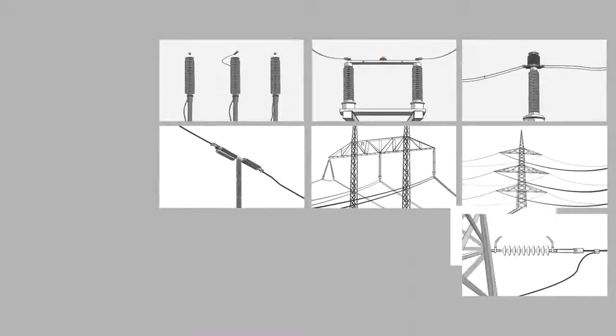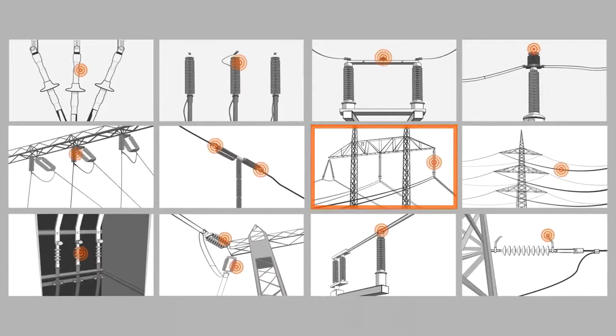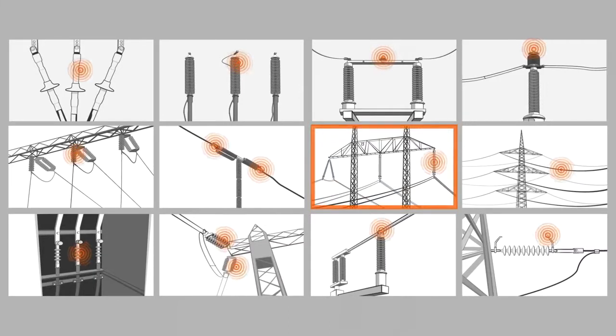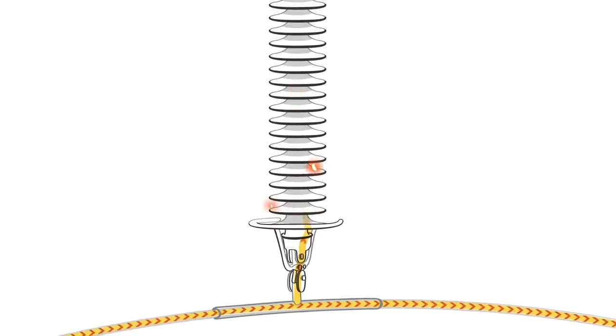There are many types of partial discharges. When a discharge happens along the surface of the insulator, in our example, it is called a surface discharge. Over time, the surface discharge will get worse, eventually leading to flashover, meaning a complete failure of the insulator.